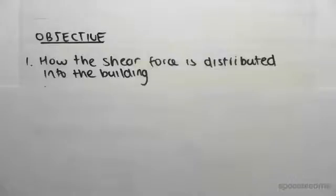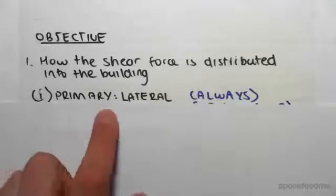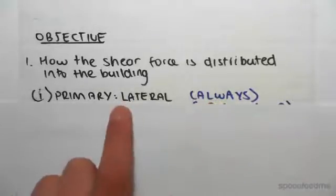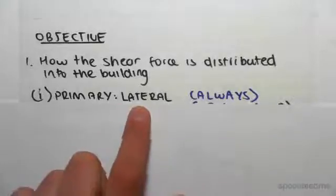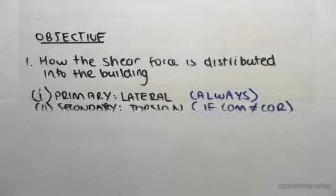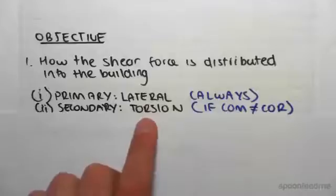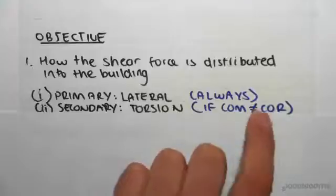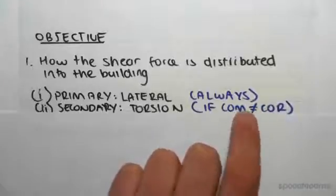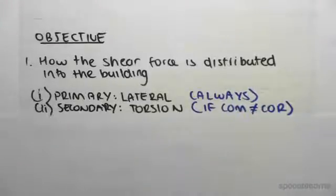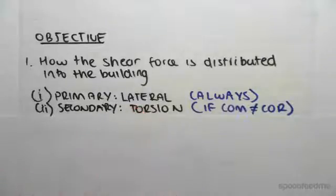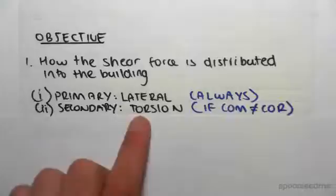It's put in firstly and primarily laterally - this is always the case. We always get the shear force put in naturally, but what can sometimes happen secondary is through torsion. This occurs only when the center of mass is not at the same place as the center of rigidity. We're going to talk about what those terms mean later, but just know from the outset that you're always going to get it put in laterally, but sometimes you might additionally have torsion.